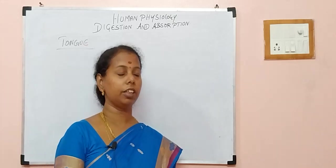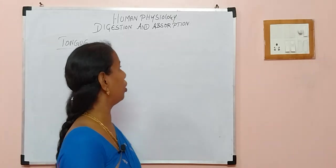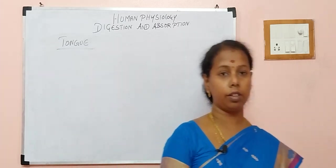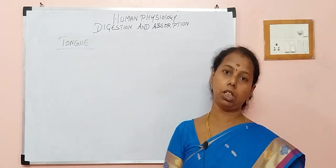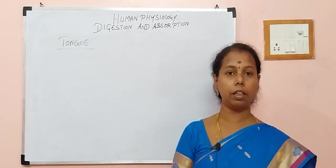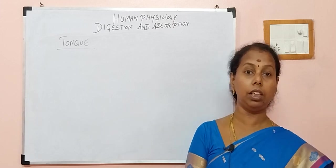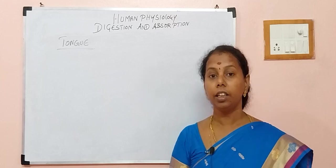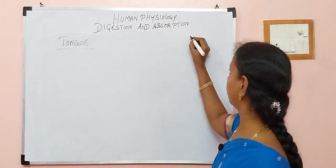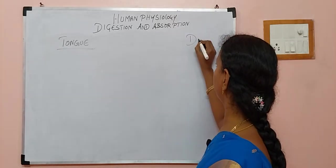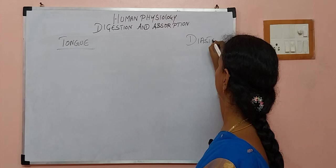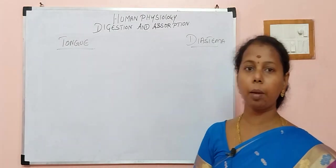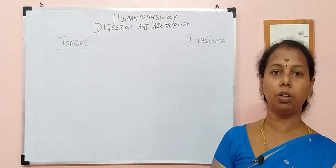Very good morning children. In this video we are going to discuss the tongue. Before that, as always, the last video's question: What was the gap that exists between the teeth in a rabbit? Many of you answered very correctly — it is diastema. Diastema is the natural gap that exists between the teeth.